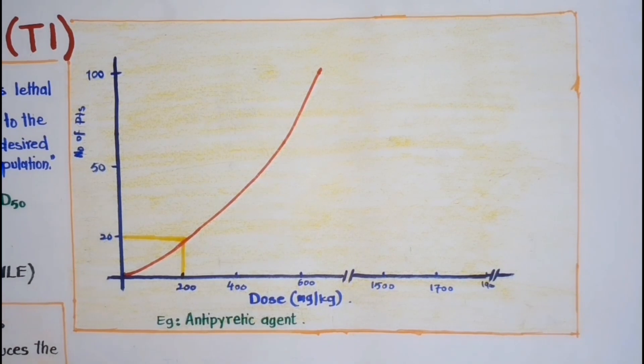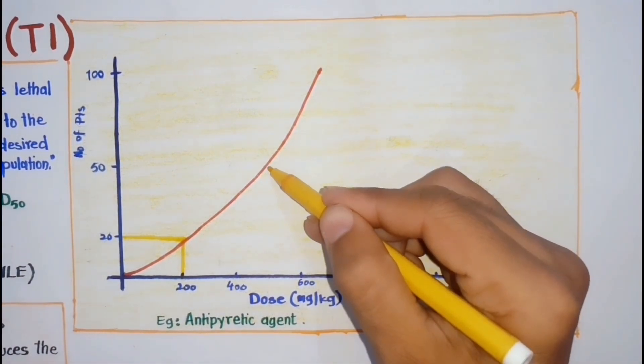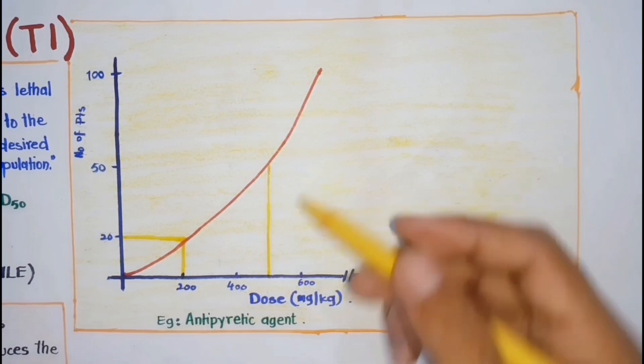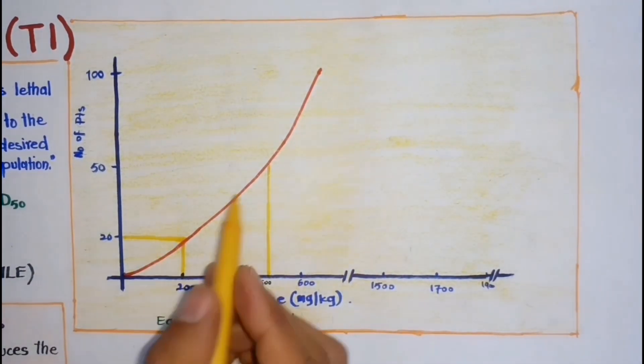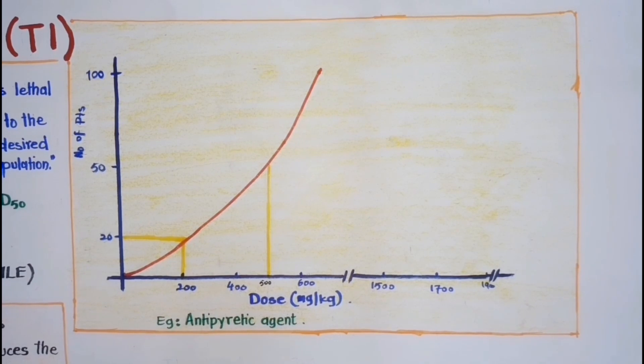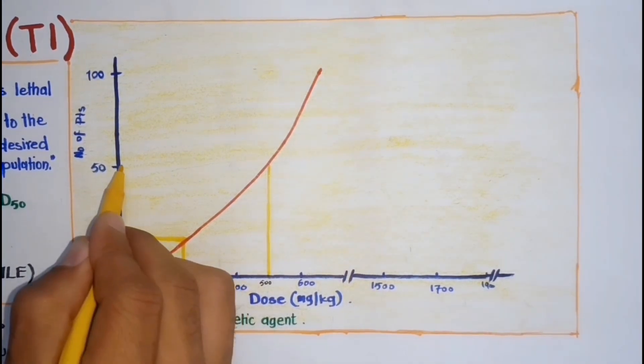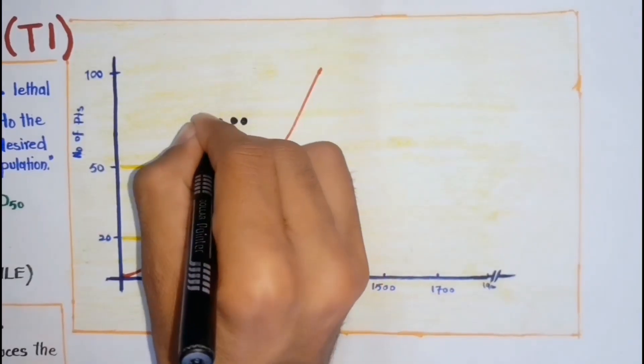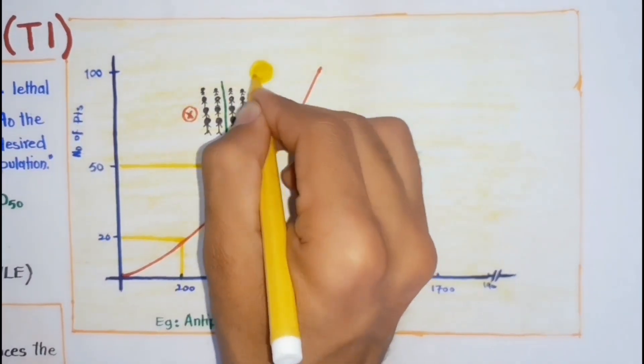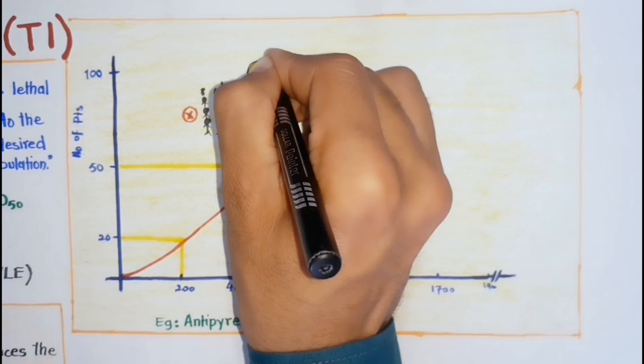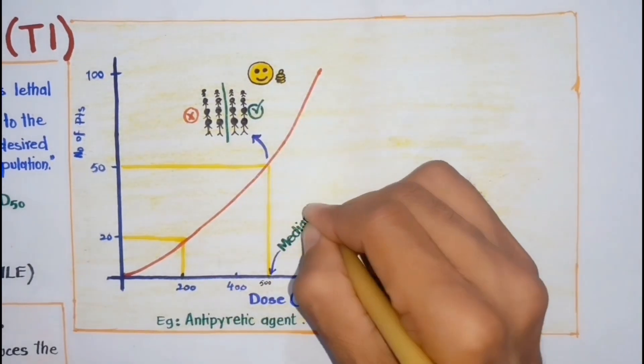While increasing the dose continuously until it reached 500 mg, for example, which showed antipyretic action in 50 test subjects. Now, this is median effective dose or ED50 for this agent.